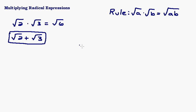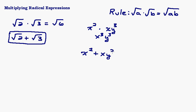It's similar to working with exponents. If I had x squared times x y to the third, those are not like terms, but I'm multiplying, so I can multiply them together and get x to the third y to the third — I multiply x squared times x. But if I had x squared plus x y to the third, I cannot add those together. They're not like terms; I can't combine them.